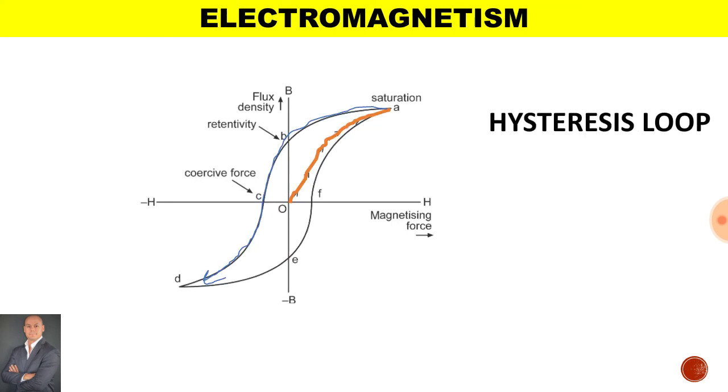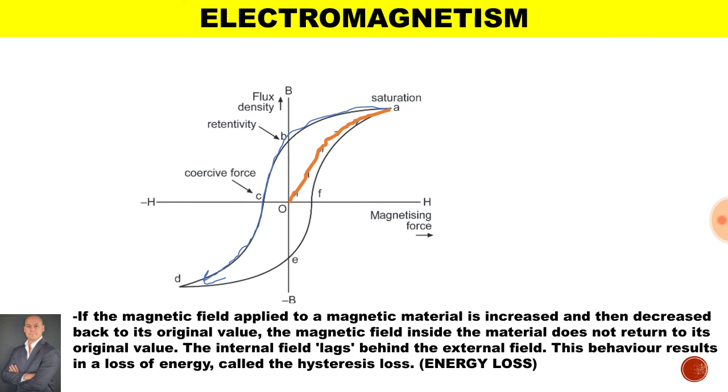Here is a hysteresis loop. Now if we take the theoretical part of this, if the magnetic field applied to the magnetic material is increased and then decreased back to its original value, the magnetic field inside the material does not return to its original value. The internal field lags behind the external field. This behavior results in a loss of energy known as hysteresis loss.